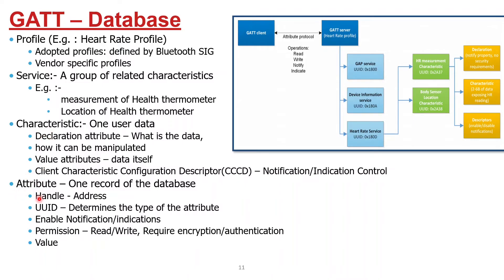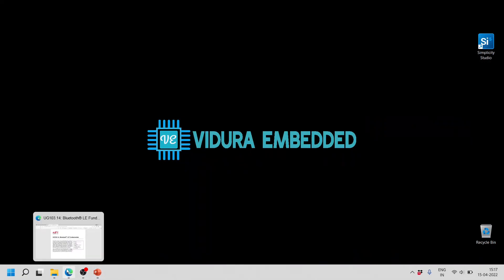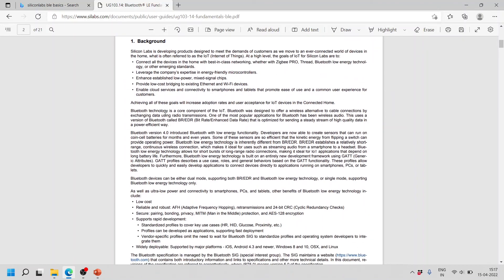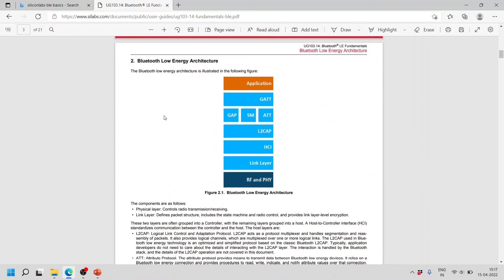Regarding attributes: one record of the database handles the address or UUID, determines the type of attribute, enables or disables notifications, and provides permissions such as read or write, requiring encryption or authentication. The attribute also provides the actual values. We will come to all these things while developing an application, and at that point you will understand these concepts better using Simplicity Studio.